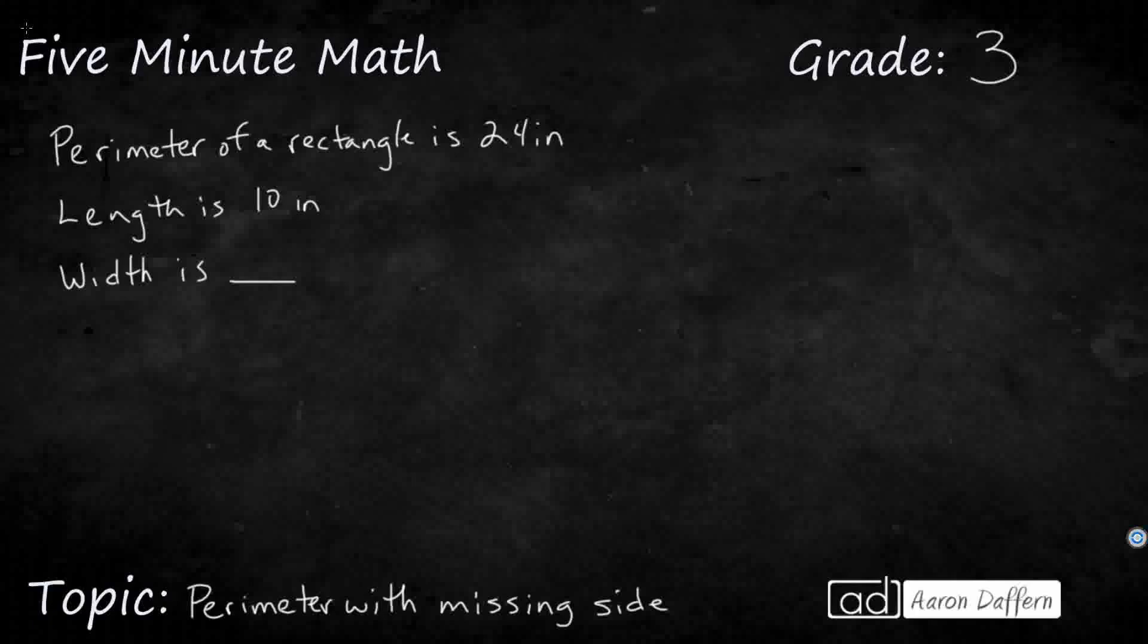Hello, and welcome to 5-Minute Math. Today we are looking at the third grade concept of perimeter, specifically how we can find the missing side lengths if we are given the perimeter and another side, and we'll do it in five minutes or less.